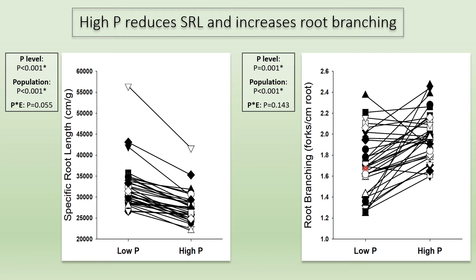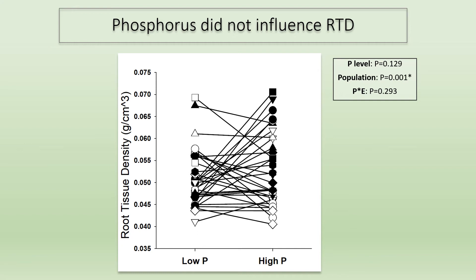For root functional traits, we found that higher phosphorus leads to a reduction in specific root length, which agrees with my prediction that under higher phosphorus, plants should express root traits with reduced absorptive capacity. However, I found that higher phosphorus also led to the expression of a higher degree of root branching — interestingly, the opposite of my prediction that under higher phosphorus, plants should express lower branching. Again, populations differ greatly in both SRL and branching under both phosphorus conditions, as the population term is always significant with very low p-values. For root tissue density, phosphorus level did not have an effect on its expression, contrary to my prediction, suggesting that RTD is not as responsive to different levels of phosphorus as traits such as SRL and root branching.